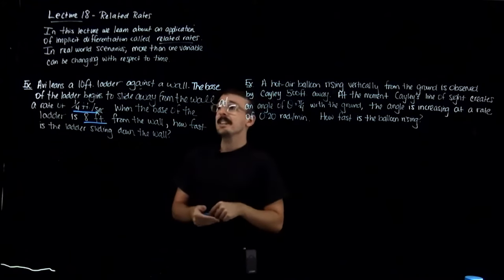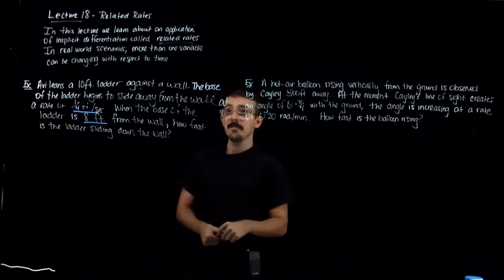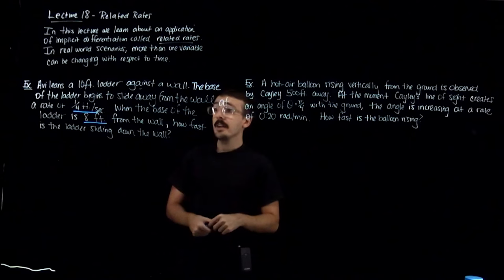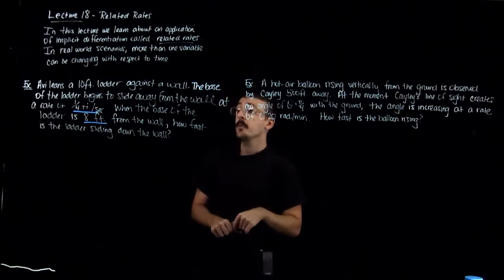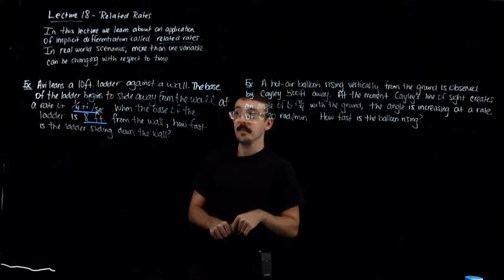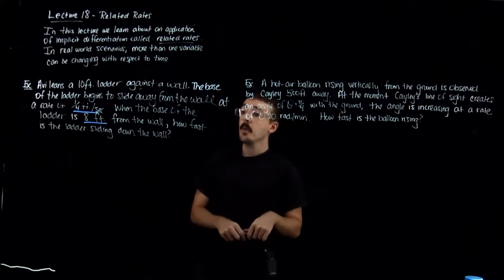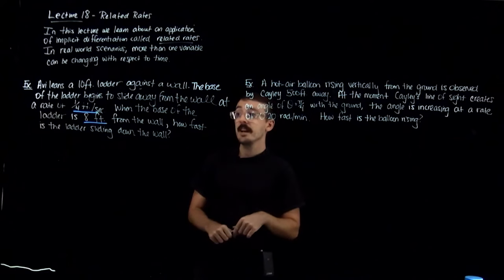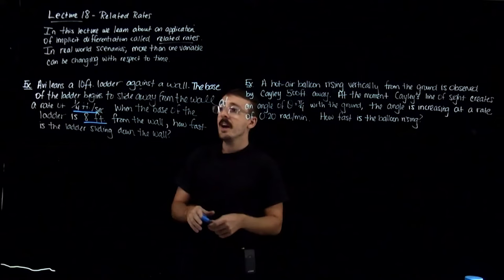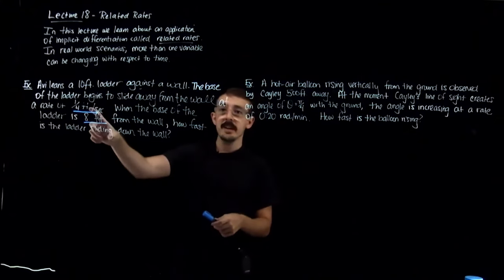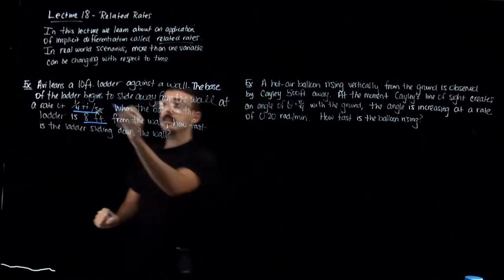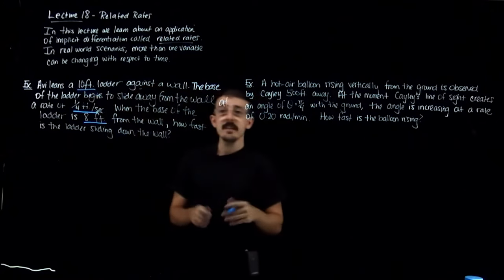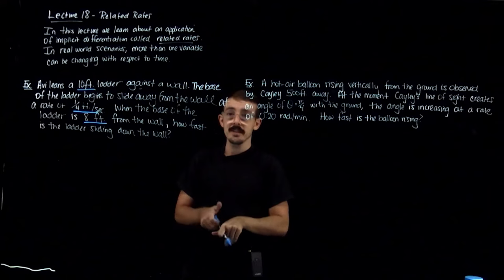It says: Avi leans a ten-foot ladder against a wall. The base of the ladder begins to slide away from the wall at a rate of one-fourth feet per second. When the base of the ladder is eight feet from the wall, how fast is the ladder sliding down the wall? I've underlined the key pieces of information, including the fact that the ladder is ten feet.